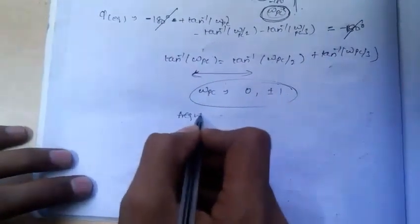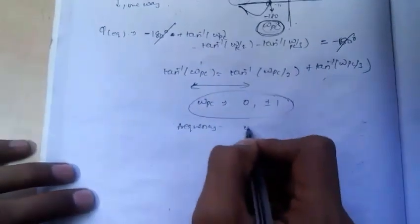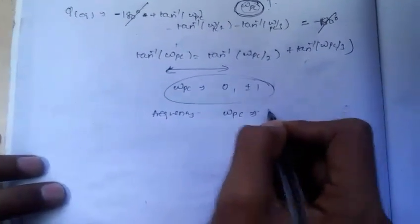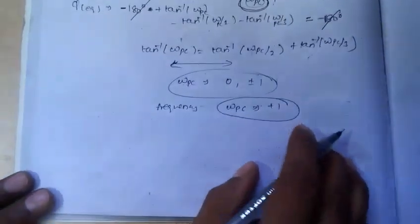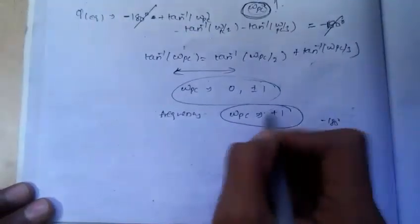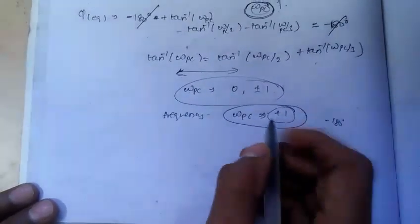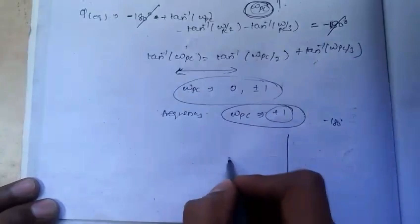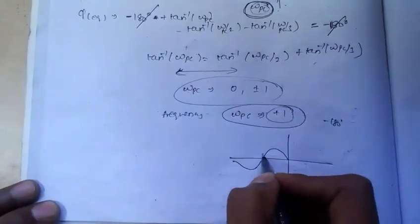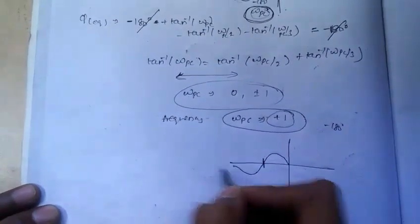Since frequency cannot be negative and frequency is not zero for this curve, the only valid value for Omega PC is plus 1. It means the value the curve has when it intersects minus 180 is plus 1 — that is, it is intersecting minus 180 at only one point, and at that point the curve has frequency plus 1. So we can conclude it is intersecting at only one point.